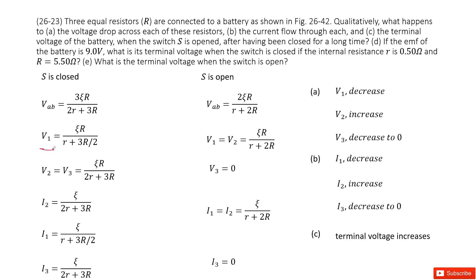We can see for V1, we compare. This is V1 S is closed, this is V1 S is open. You can see, this term is 3R over 2, this term is 2R. Of course, 2R is larger than 3R over 2. So this term is larger and this is at the bottom side for the ratio. So that means V1 is decreased. And V2 is increased.